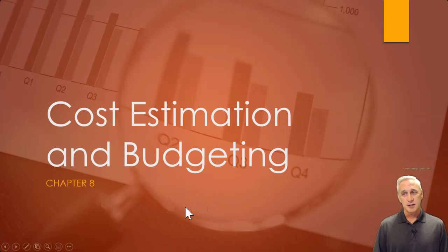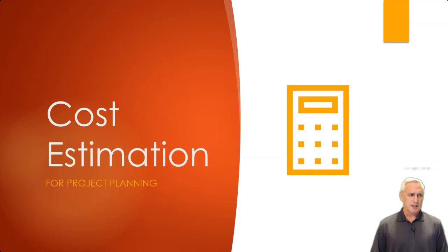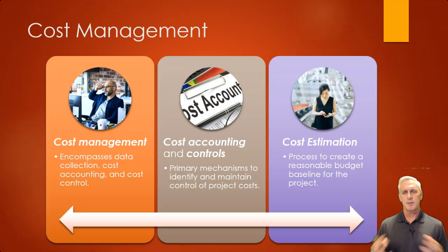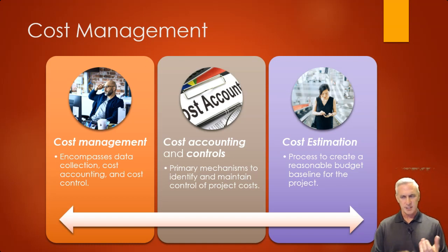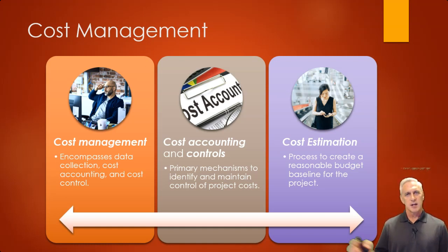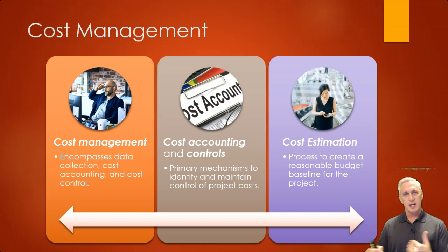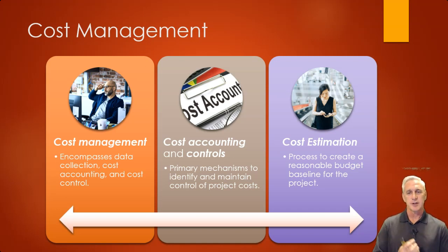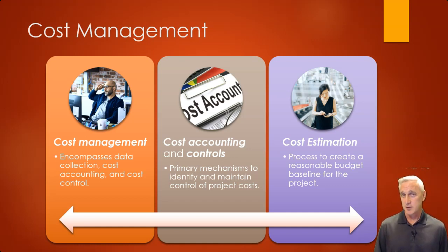We're going to start with cost estimation first. In project planning, cost estimation is crucial — we're talking about several components that we have to manage. Overall, it's called cost management, which is where we're collecting data, trying to price out things, and looking at all the controls. As we get into the details, we talk about cost accounting — breaking out different types of costs, projecting costs, and maintaining controls. Estimation is at the heart of all of it, based on quotes from others or items you can buy off the shelf.